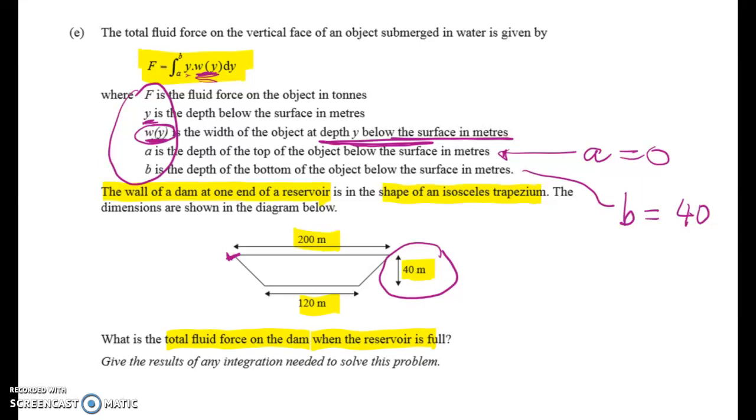So let's just do some back of the envelope stuff. When we are 0 below, then the width is 200. When we are 40 below, the width is 120. And we can see that that is dropping in a linear manner. So the equation that we're going to get for W of Y is just going to be a linear equation.